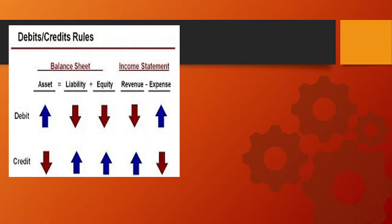Can you tell me the rule of debit and credit for the remaining three accounting elements? I am confident that using this guide, you can do it by yourself.